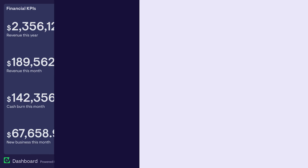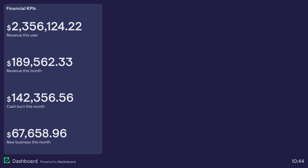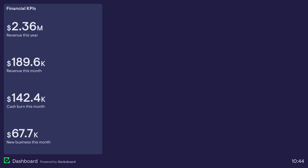Overly precise numbers can actually slow down our comprehension. Ideally, you should round your numbers to a point where the differences between figures represent a material change. As you can see here, abbreviations can also make it easier to understand what's going on.